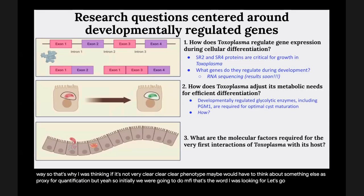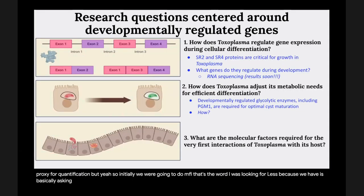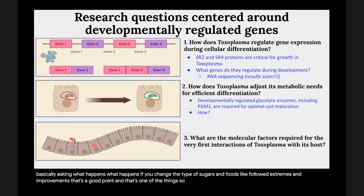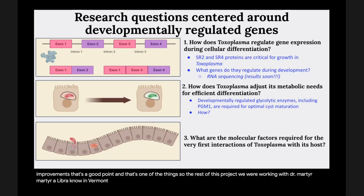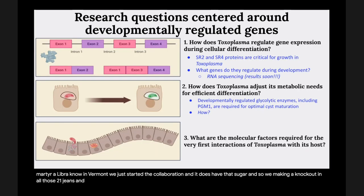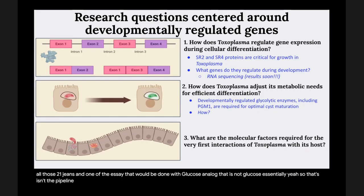Q: What happens if you change the type of sugar — like maltodextrin instead of glucose? That's a good point. The rest of this project we're working with Dr. Martorelli Bruno in Vermont, who just started the collaboration. We are making knockouts in all 21 starch metabolism genes, and one of the assays will be to grow them with glucose and with a glucose analog. That's in the pipeline.